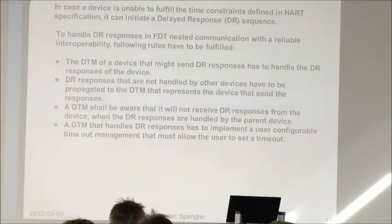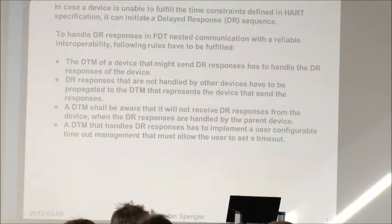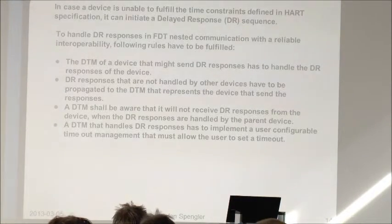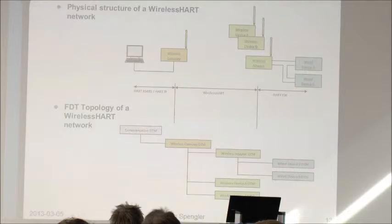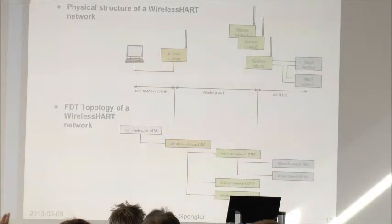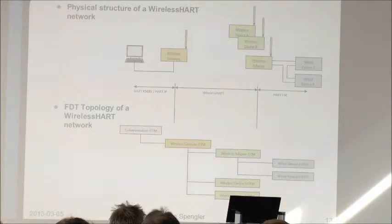It might be safer for a HART FSK device DTM to handle delayed responses even if the device can't send them, because the gateway in between can send them. But then the gateway is responsible for the delayed response. So you can see different devices, and for each device you have a DTM representation. Depending on where the delayed response is sent — for example, if it's sent by the wireless adapter — then the wireless adapter DTM is responsible for handling the delayed response.